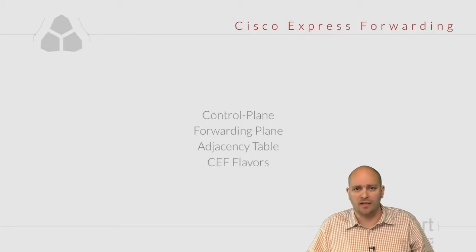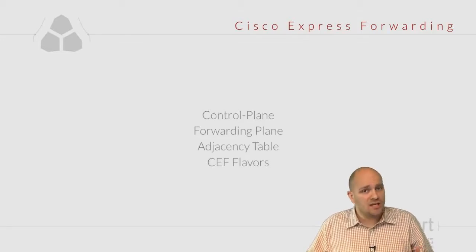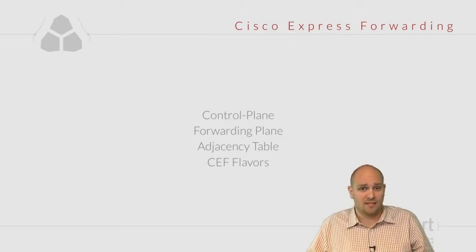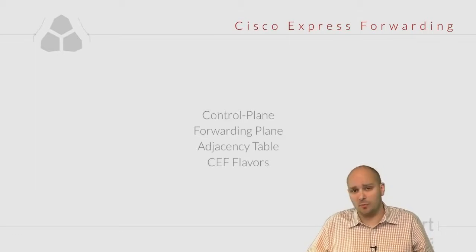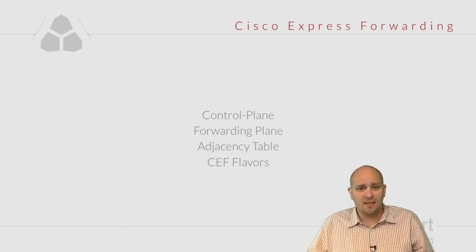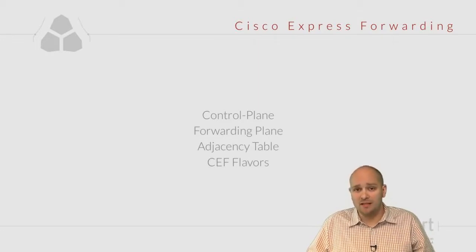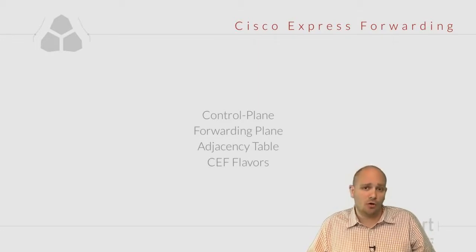These tables include the routing table, the forwarding table, and the adjacency table, which is a very important table in Cisco Express Forwarding. All this comes in different flavors, implemented differently on different devices. These are the things we are going to talk about next.